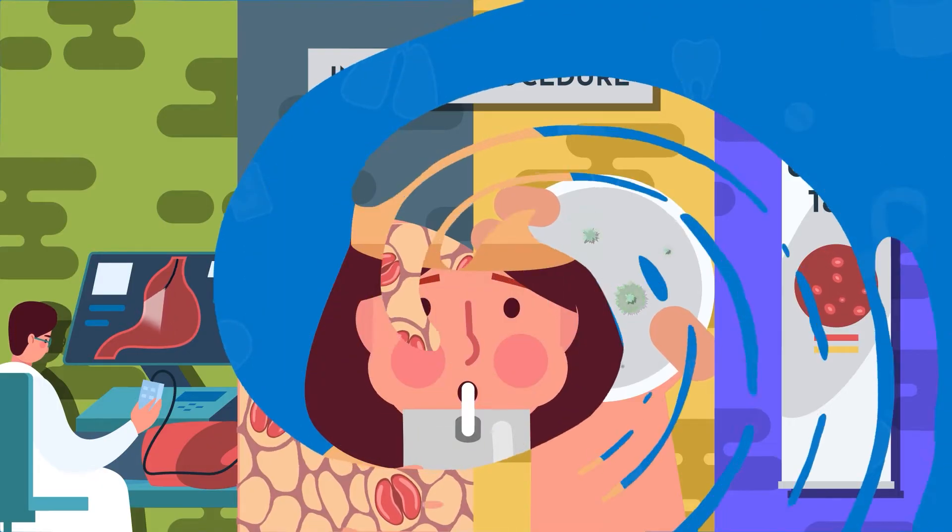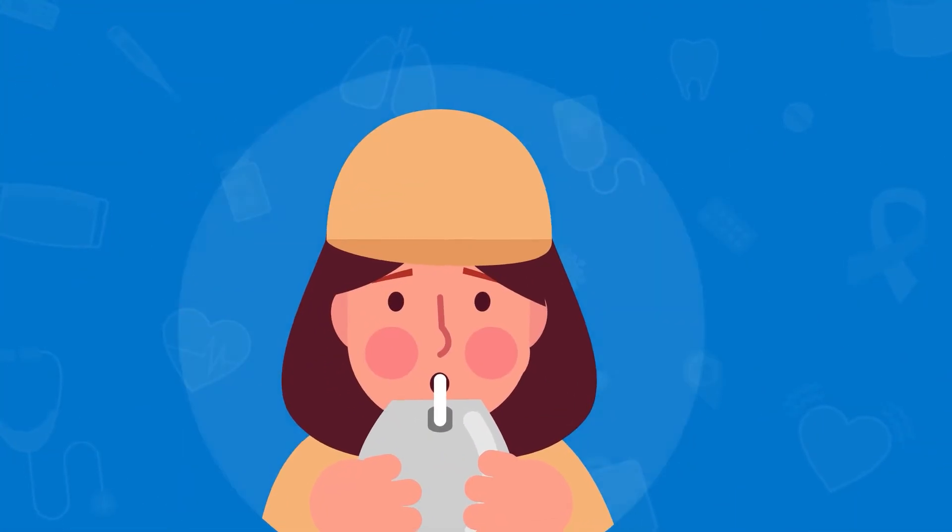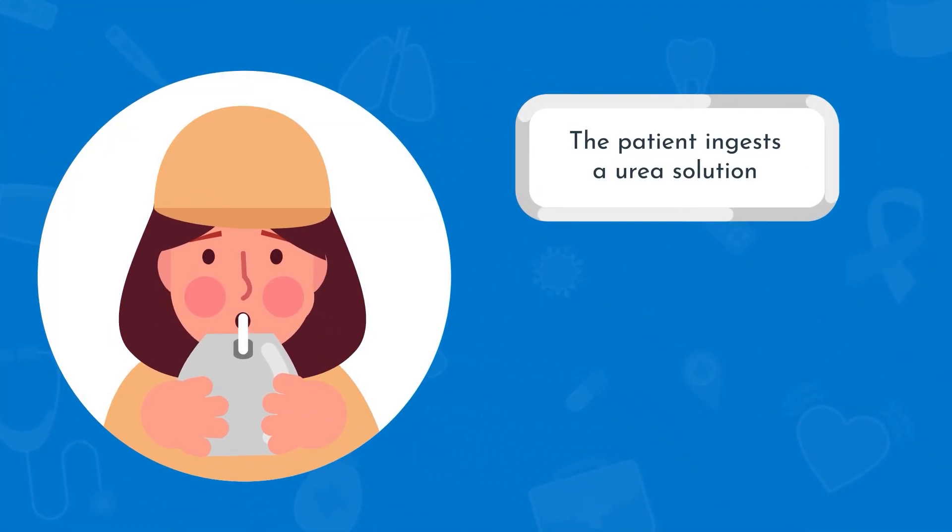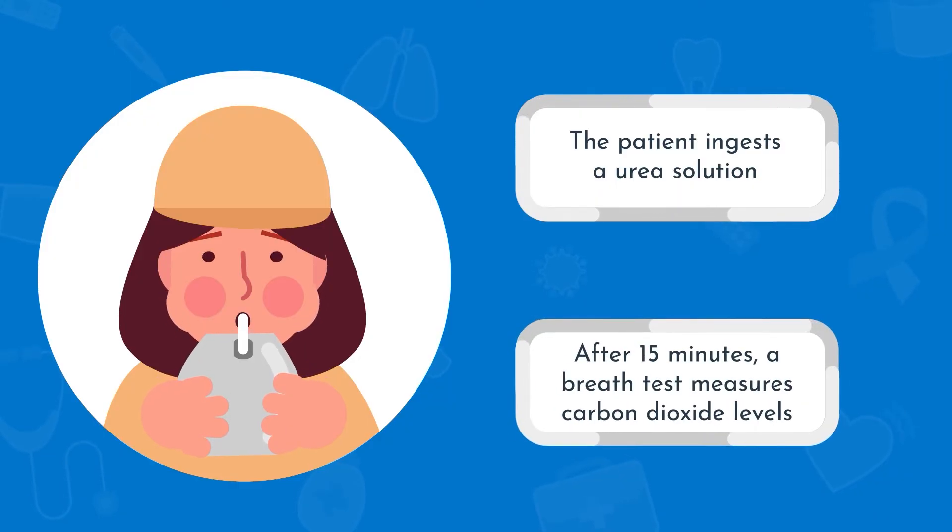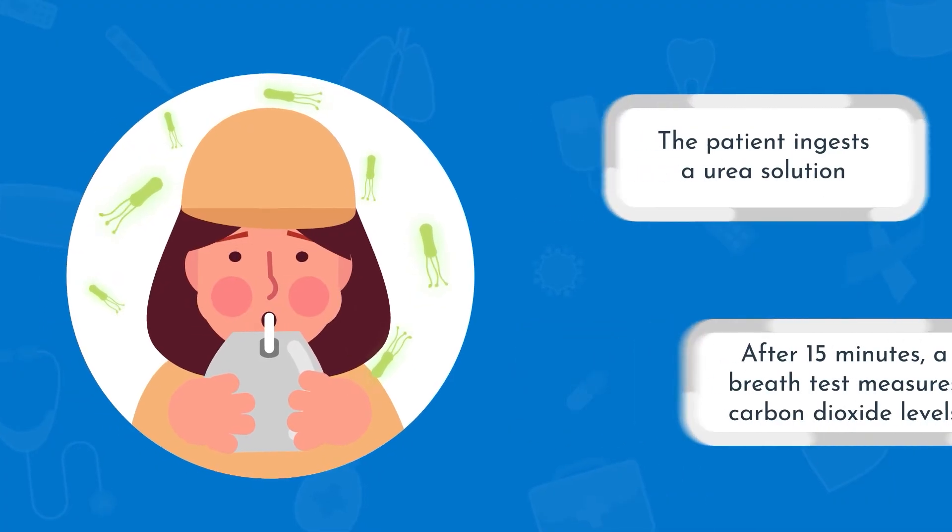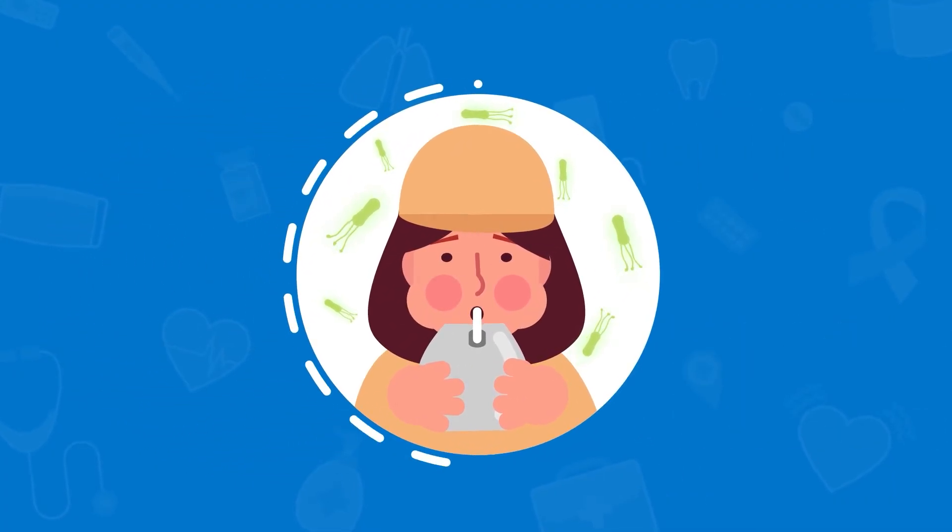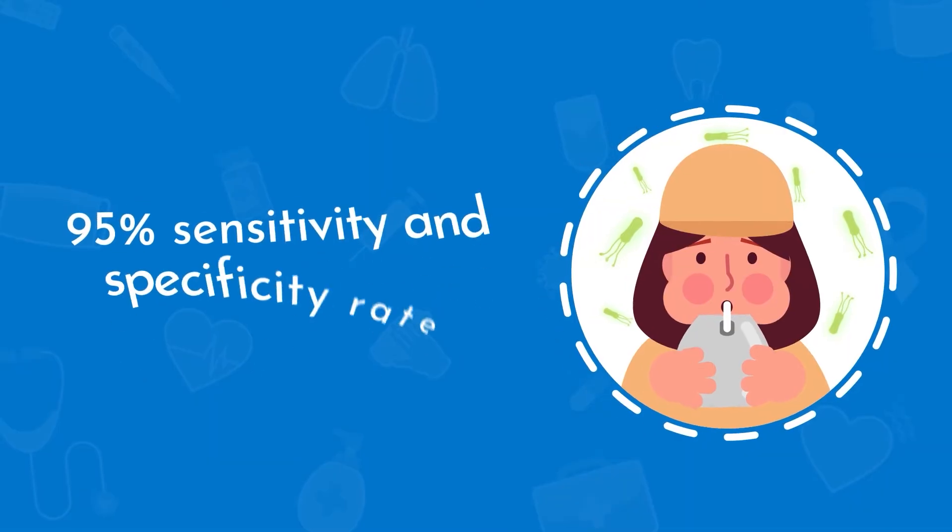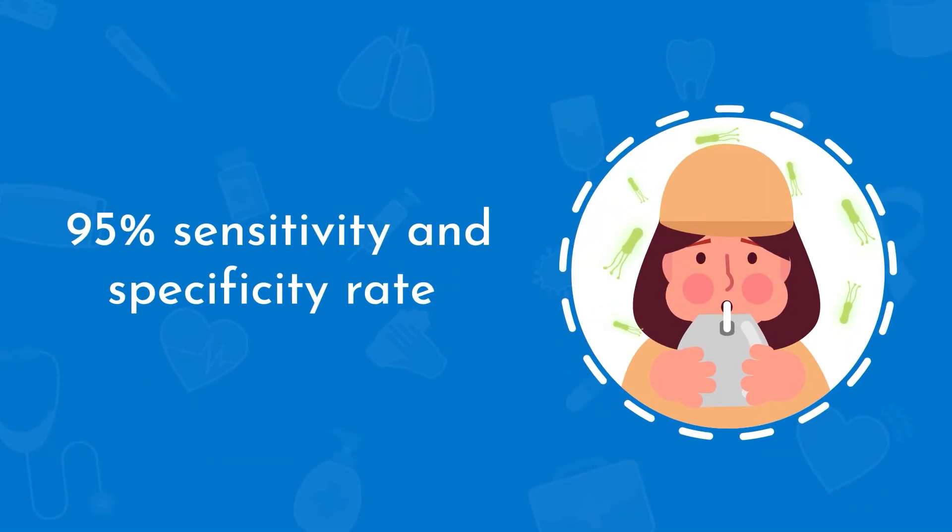The urea breath test is the most reliable non-invasive test. The patient ingests a urea solution, and after 15 minutes, a breath test measures carbon dioxide levels, indicating the presence of H. pylori. The urea breath test is highly accurate, with a 95% sensitivity and specificity rate.